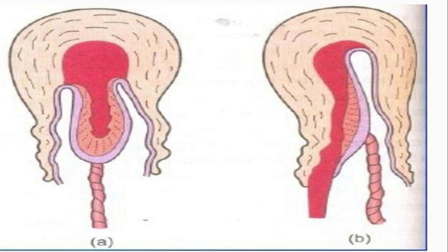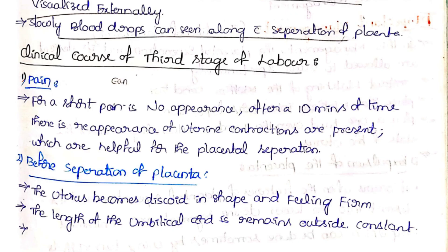In the Duncan method, blood drops can be seen and escape as separation progresses — this is visible externally. These are the two methods of placental separation. In the clinical course of the third stage of labor, some patients have pain initially. After about 10 minutes, uterine contractions reappear, which are helpful for placental separation.